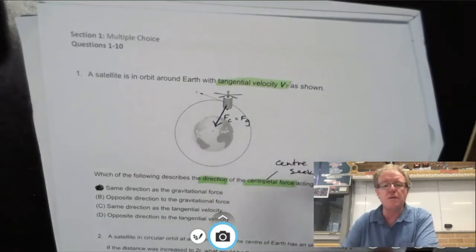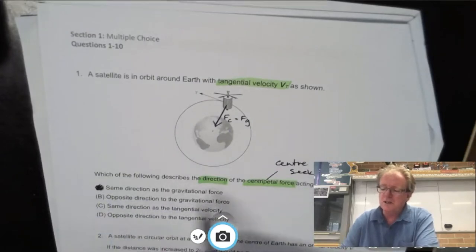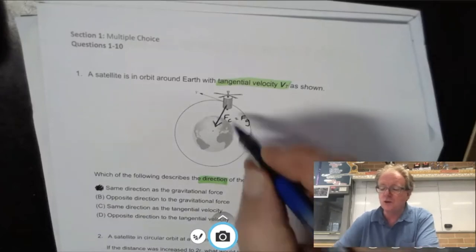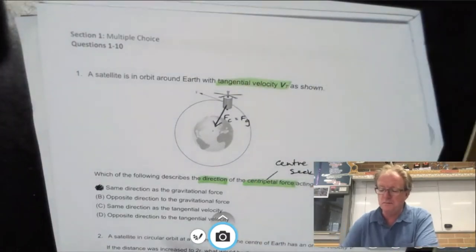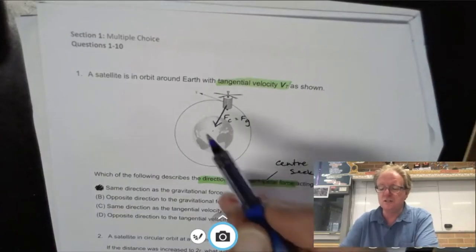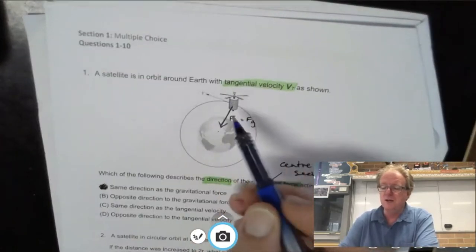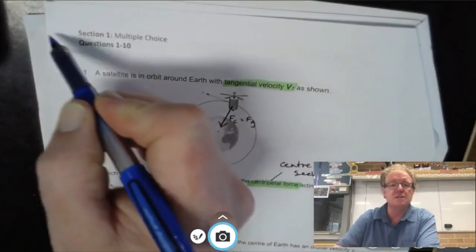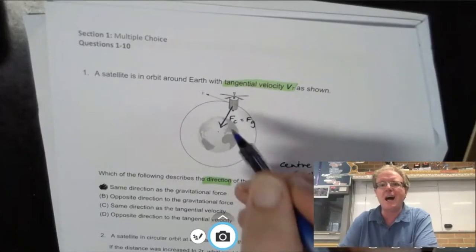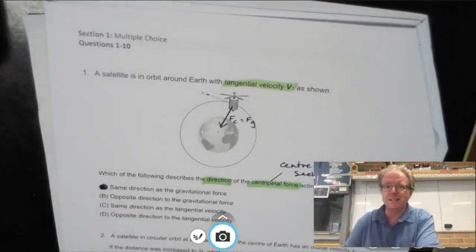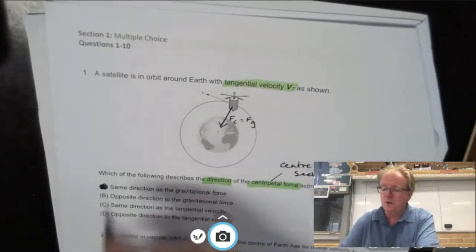Remember that the centripetal force is being provided as the net force by the gravitational force of the planet. So we can say that Fc equals Fg. So A is the correct response - the centripetal force is going in the same direction as the gravitational force. Opposite direction to the gravitational force? No, that would be going in a circle in that direction. Same direction as the tangential velocity? No, because if it was going in the same direction this satellite would be going off in a straight line. Some force according to Newton's first law has to be occurring because it's an unbalanced external force causing an acceleration, a change in direction of your satellite. So A is the best response there.